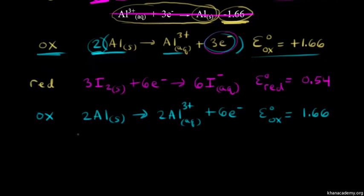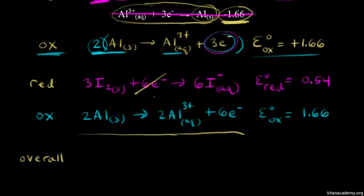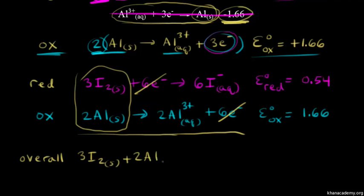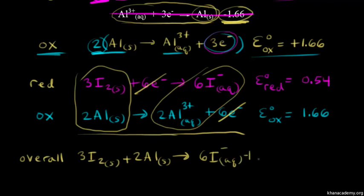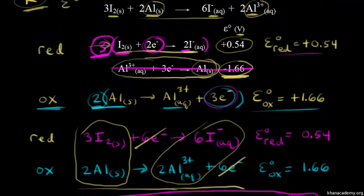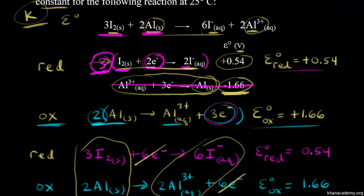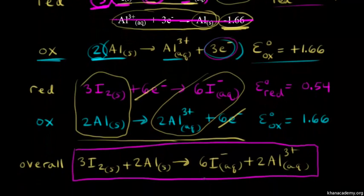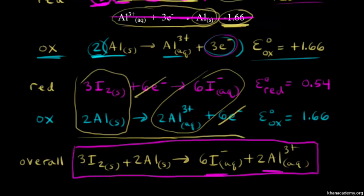We add our two half reactions together, and if we did everything right we should get back our overall equation. The six electrons on the reactant side and six electrons on the product side cancel out. So for reactants we have 3I₂ plus 2Al, and for products we have 6I⁻ plus 2Al³⁺. Let's double check: 3I₂ plus 2Al gives 6I⁻ plus 2Al³⁺ — we got back our original reaction.